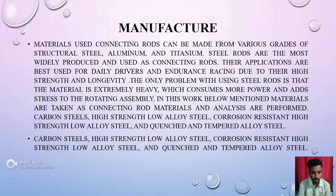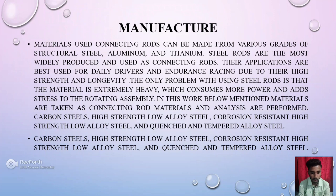Manufacturing process of connecting rod. Materials used: Connecting rod can be made from various grades of structural steel, aluminum, and titanium. Steel rods are the most widely produced and used as connecting rods. Their applications are best suited for daily drivers and endurance racing due to their high strength and longevity. The only problem when using steel rods is that the material is extremely heavy, which consumes more power and adds stress to the rotating assembly.